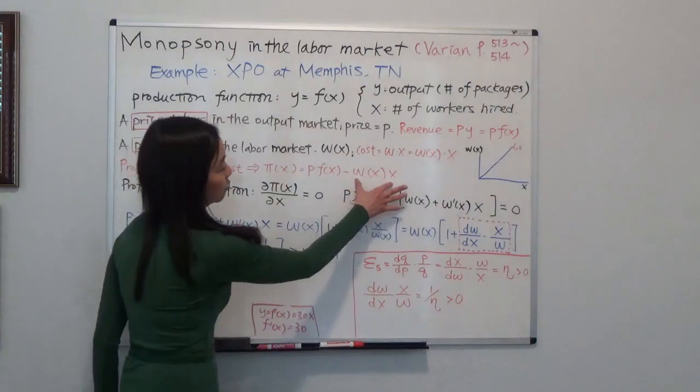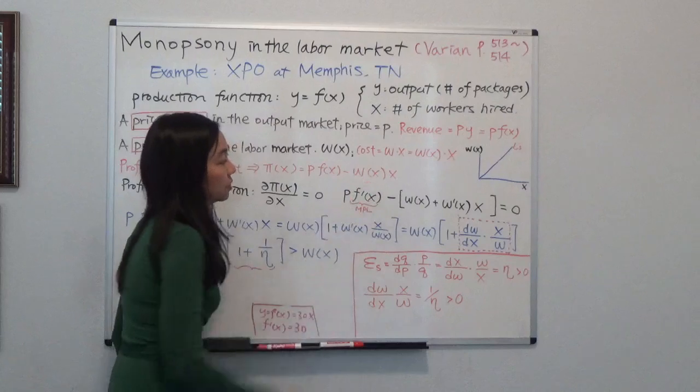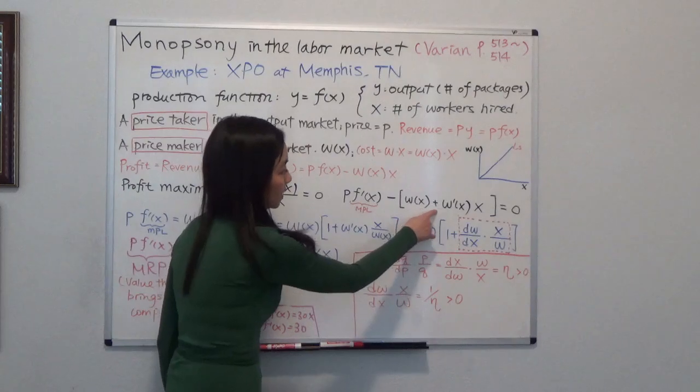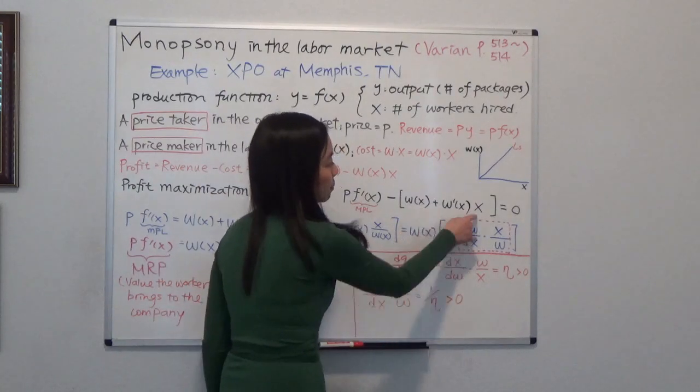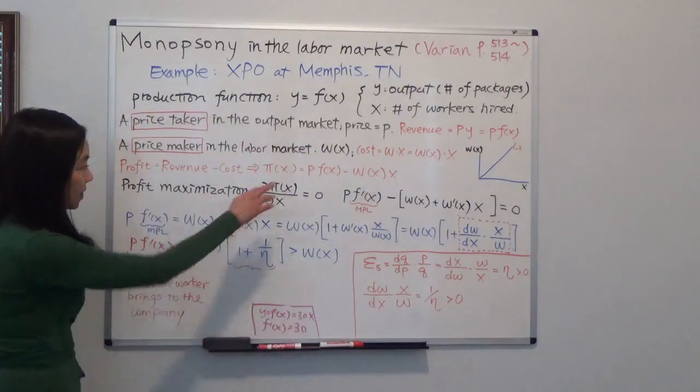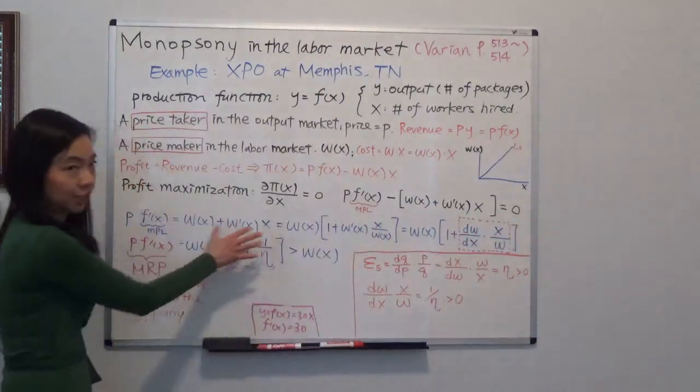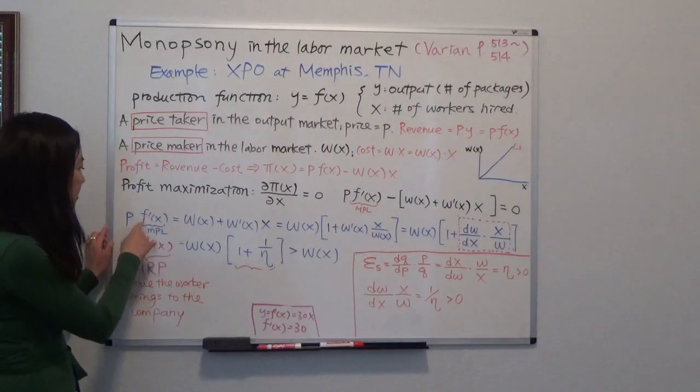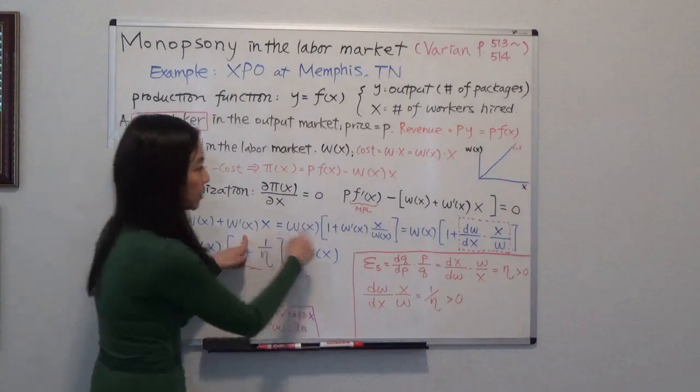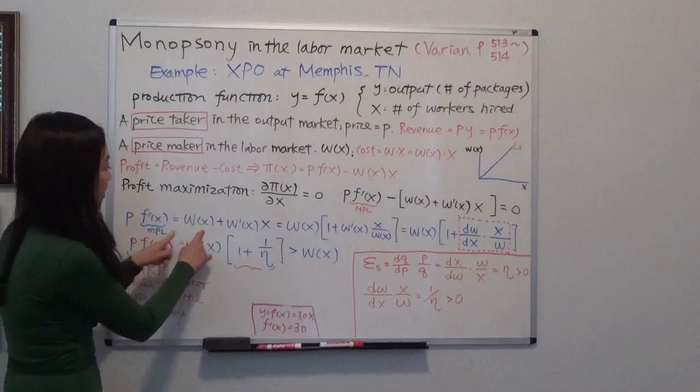And now we're going to take the derivative of this total cost with respect to X. So you have to use the product rule. And taking the derivative of that, you get W(X) plus W'(X) times X. That's just the product rule. And set that equal to 0 because we want to maximize our profit. And then, next, I'm going to move this term to the right-hand side. I didn't change anything here. So P times F'(X) is equal to W(X) plus W'(X) times X. So I didn't change anything. I'm just moving that to the right-hand side of the equation.